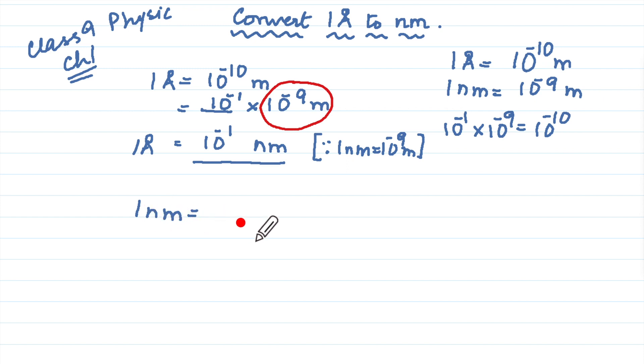Now if you want 1 nanometer is equal to dash angstrom units, what will we do? We will say if 1 angstrom unit is 10 to the power minus 1 nanometer, then 1 nanometer will be equal to x.